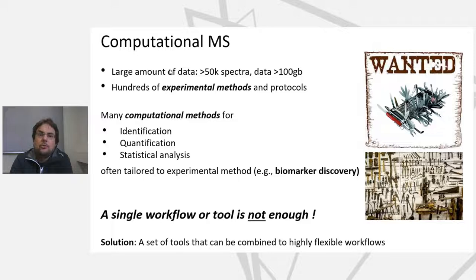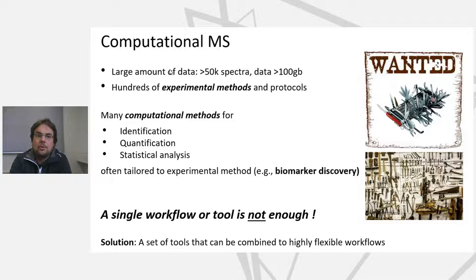Modern instruments produce quite a large amount of data — we easily end up with more than 50,000 spectra in a single run, and data can reach up to 100 gigabytes. In larger studies you can imagine much more. That's one challenge. The other challenge in computational mass spec is that we usually have to deal with hundreds of different experimental methods and protocols.